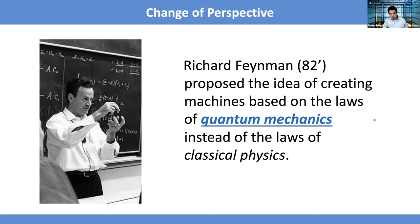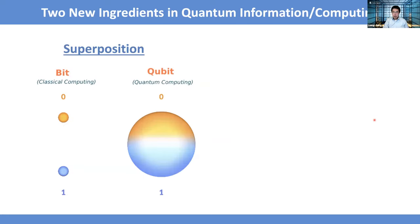People probably have different levels of understanding of quantum mechanics, so I'd like to point out the two unique ingredients in quantum. The first ingredient is superposition. In classical bits, we can have either zero or one — only one of the two possible values. But for quantum bits, you can have a continuous choice between zero and one; you can be in a superposition, even with complex coefficients.